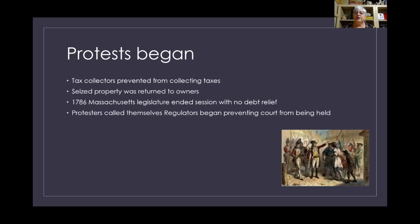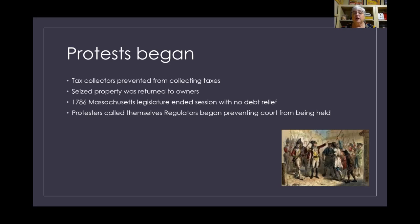In 1786 the Massachusetts legislature ended their session with no debt relief for farmers or veterans. The protesters were furious — it would be another year before the legislature met again. So they formed groups they called regulators, going from town to town surrounding the courthouse and preventing courts from meeting, so no judgments on debts could be imposed.